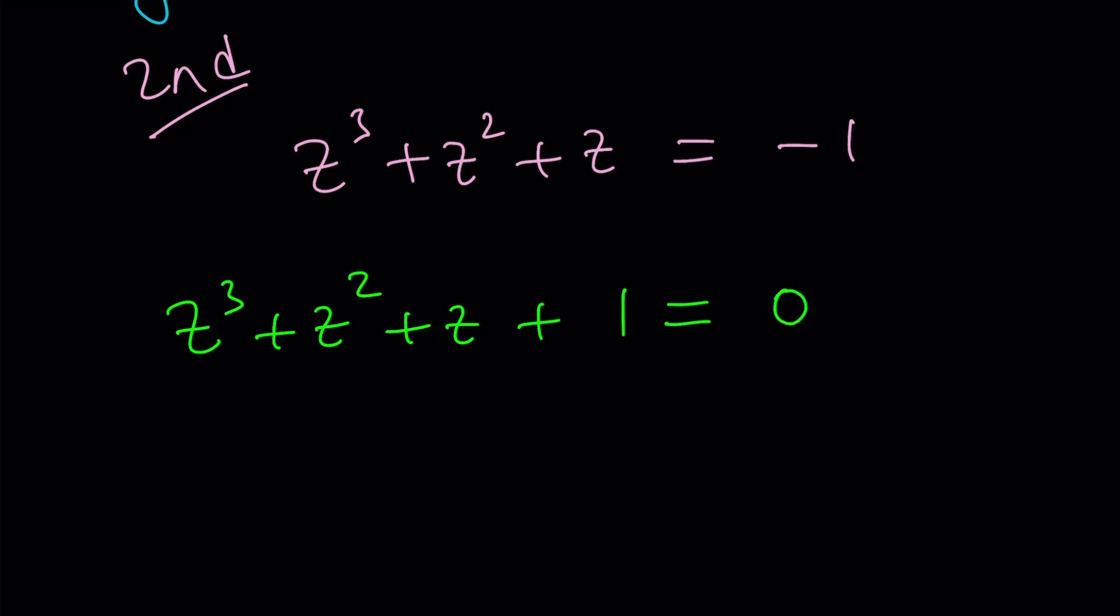Now here's what we're going to do. This is factorable by grouping. Let's make two groups. This one and this one. Take out z squared.